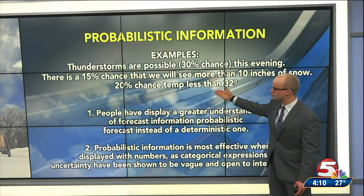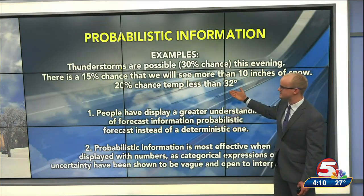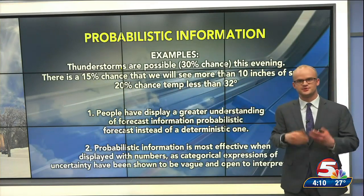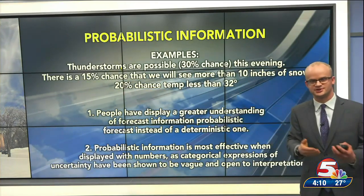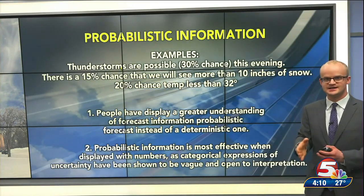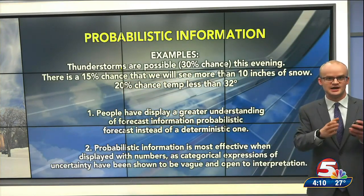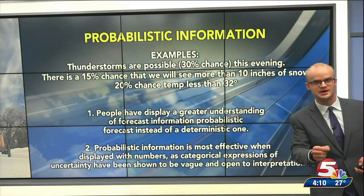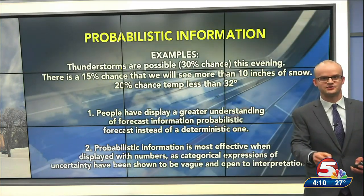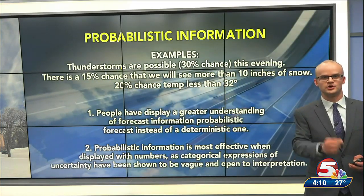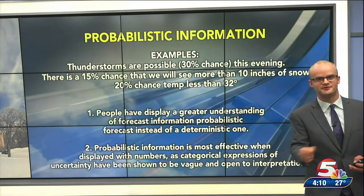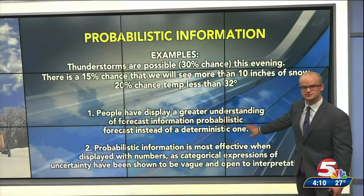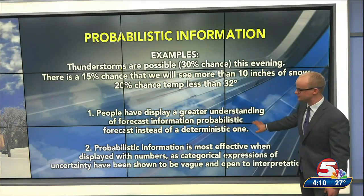Another example: a 20% chance that temperature is less than 32 degrees. Those are all examples of probabilistic forecasts, instead of a deterministic forecast where the temperature will be 55 degrees or there will be 10.5 inches of snow.